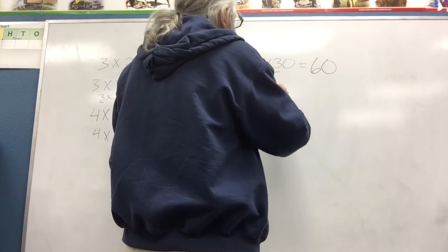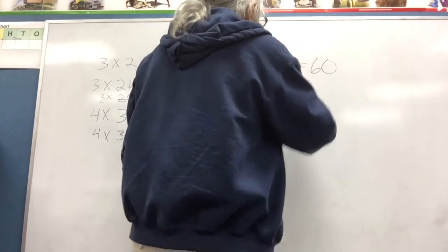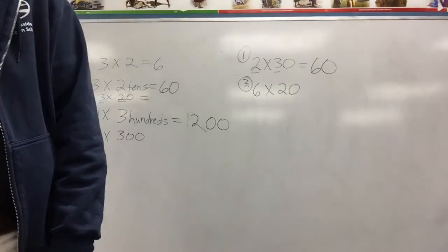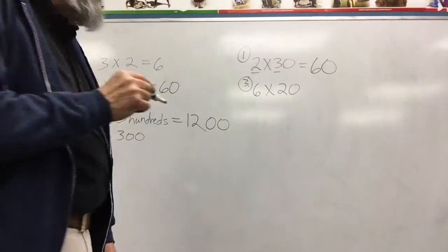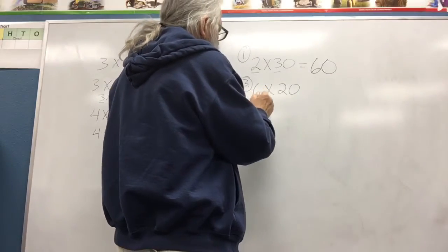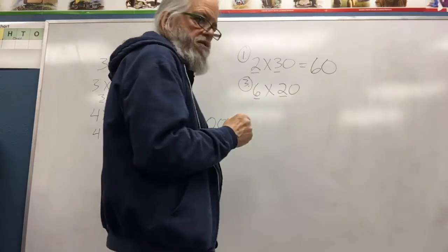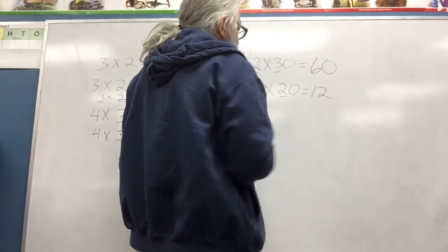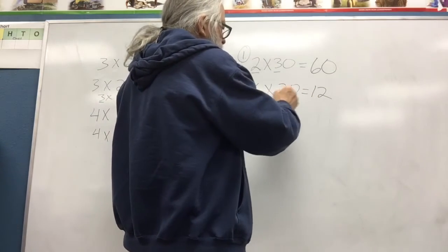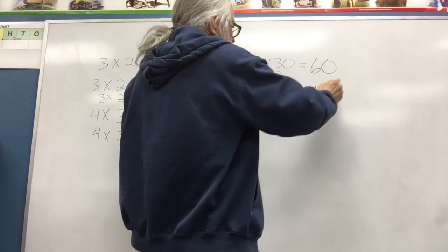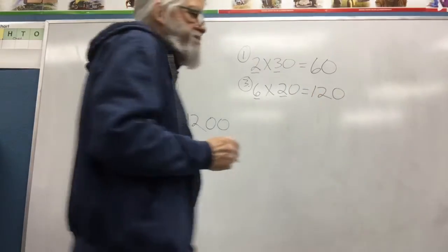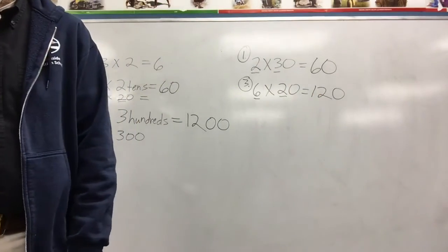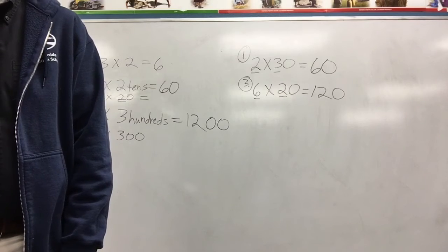So what you're going to think is 2 times 3. 2 times 3 is 6. That's 2 times 3 tens, so it has a 0 after it. And you look at number 3. And it's 6 times 20. So notice, again, you're going to do 6 times 2, which is 12, but it's 2 tens. You've got a 0 after this. So you have 1, 0 in your answer.